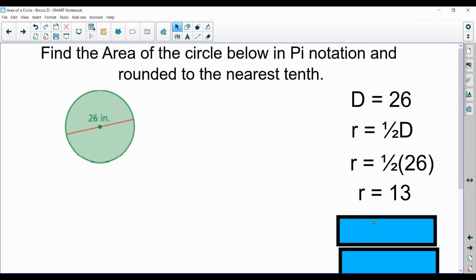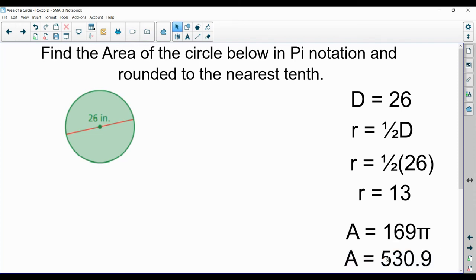You just put it in your formula and get area equal 169 pi. Now remember, it said round it off to the nearest tenth, your answer. You'll multiply 169 times pi and round it off to the nearest tenth. That's one number after the decimal place. And you'll get 530.9. Rocco, we did one with a diameter, just to make sure you know how to do it in case you get a diameter, because sometimes you do. Now you should be ready for it.